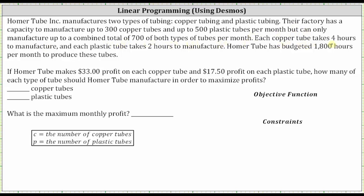Each copper tube takes four hours to manufacture and each plastic tube takes two hours to manufacture. Homer Tube has budgeted 1,800 hours per month to produce these tubes. If Homer Tube makes $33 profit on each copper tube and $17.50 profit on each plastic tube, how many of each type of tube should Homer Tube manufacture in order to maximize profits? We also want to know the maximum monthly profit.